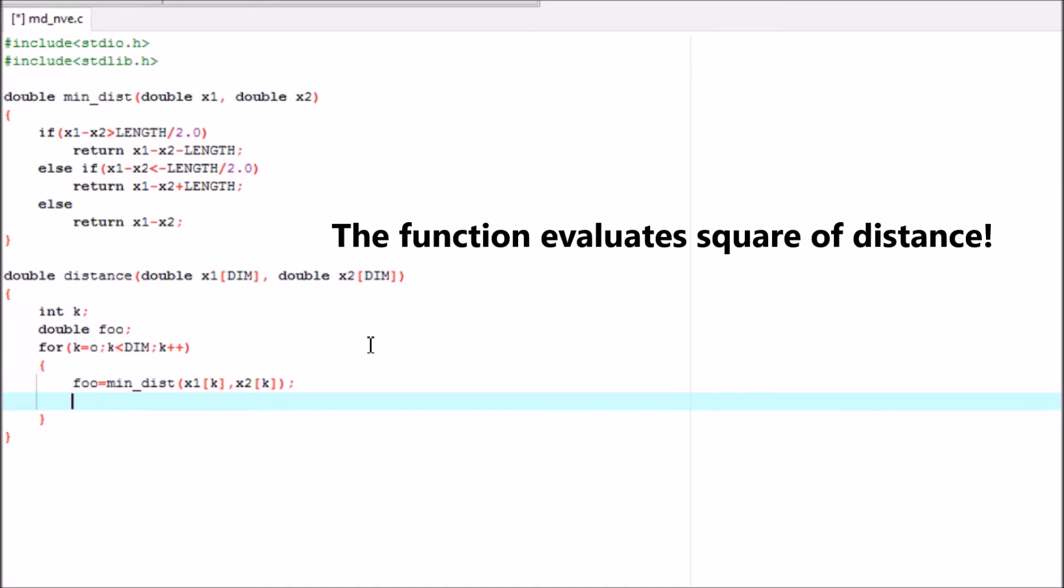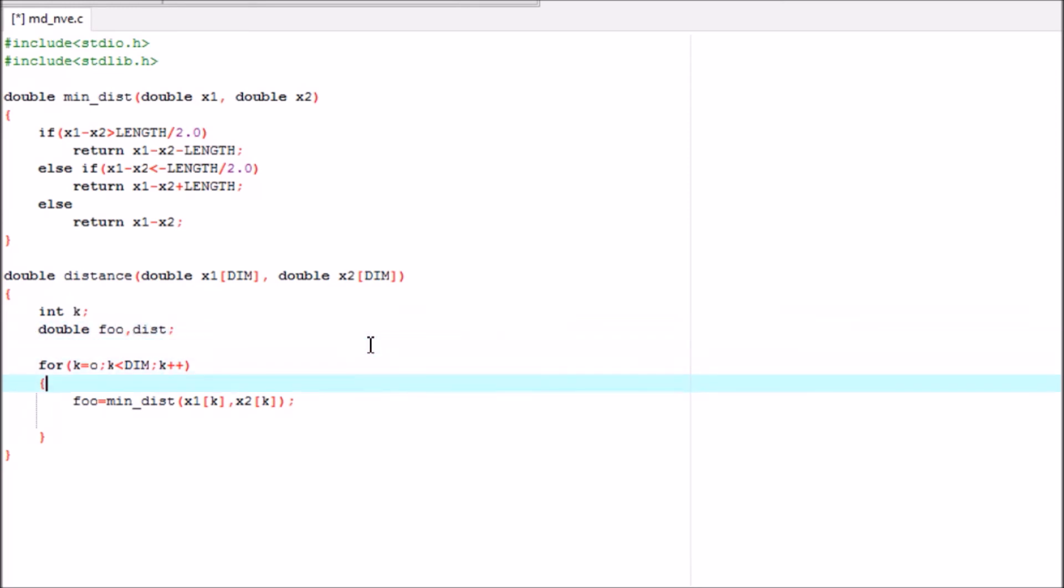Then I would have to add the variable distance dist. I would initialize distance as 0, dist as 0, and then I would update accordingly in each of the k values. For each k value, I will update the distance by multiplying foo with foo. At the end I will just return dist.